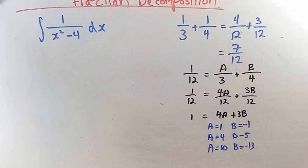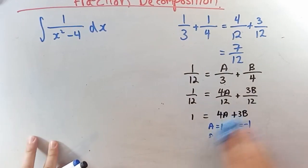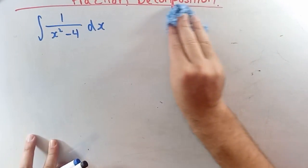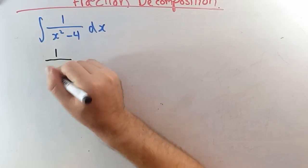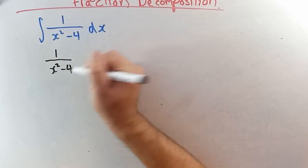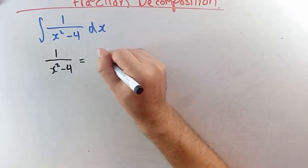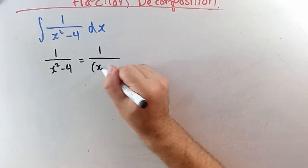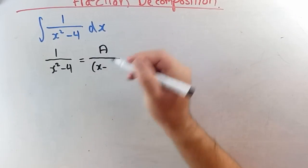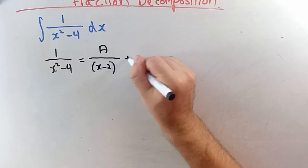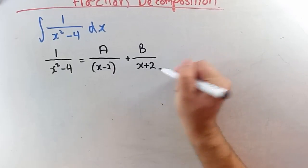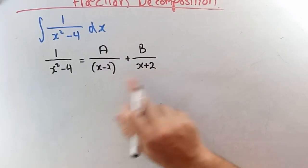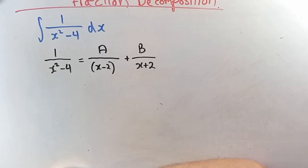It's actually quite an easy process. Before doing the integral, let's consider 1 over x squared minus 4. We want to separate it into two factors: a on x minus 2 plus b on x plus 2, since x minus 2 times x plus 2 gives x squared minus 4.